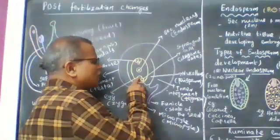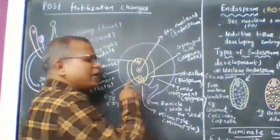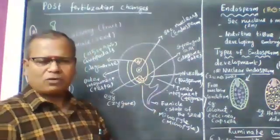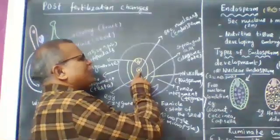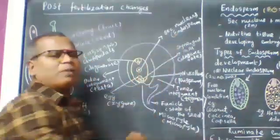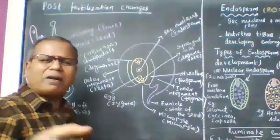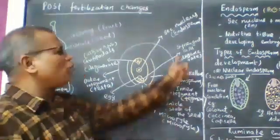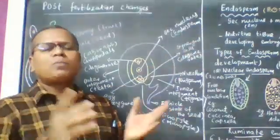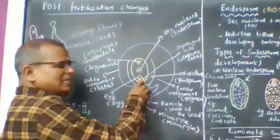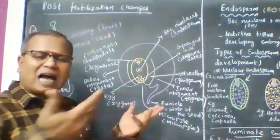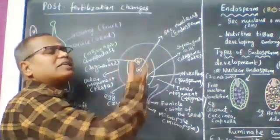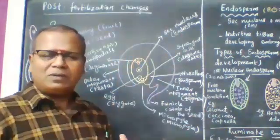After fertilization, the egg is converted into zygote. The secondary nucleus is converted into triploid endosperm. The synergids degenerate and the antipodals also degenerate after fertilization.